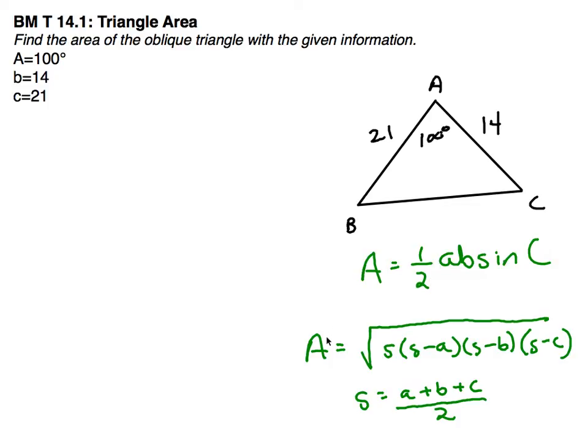The other option is if I were to have all three sides, I could use what's called Heron's formula. The area is equal to the square root of S times S minus A times S minus B times S minus C.